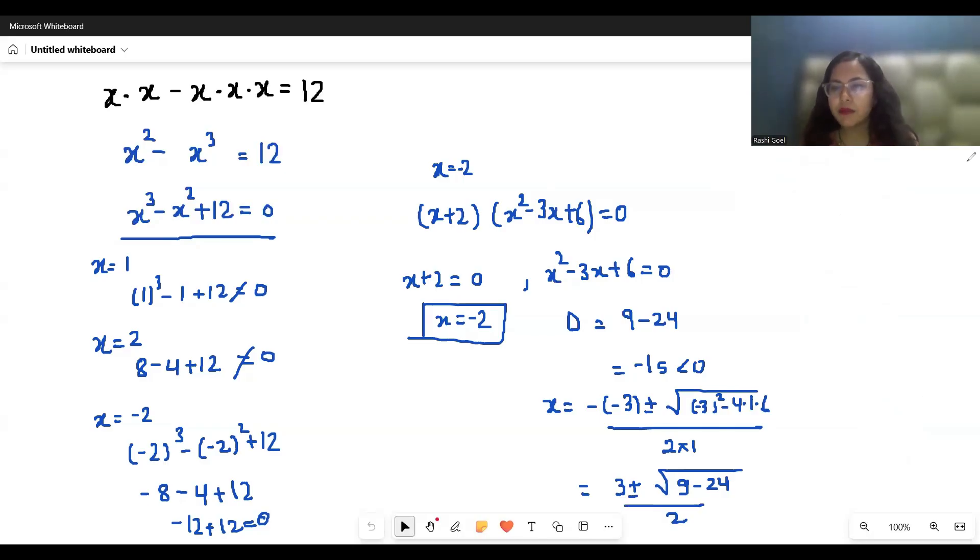This becomes x equals 3 plus minus square root of minus 15 by 2. So x equals 3 plus minus root 15 times root minus 1 by 2. We can write x equals 3 plus minus i root 15 by 2.